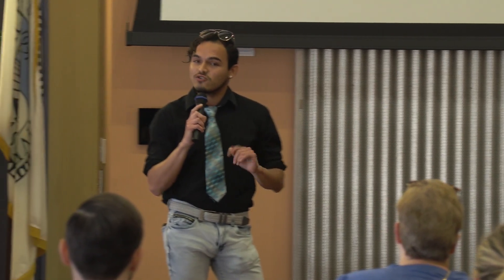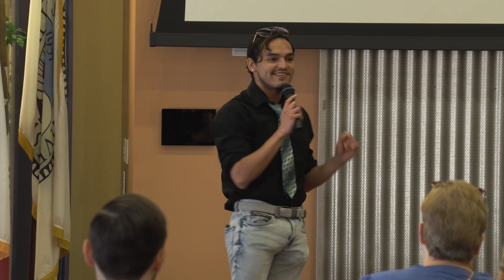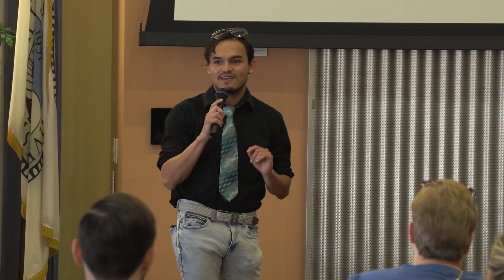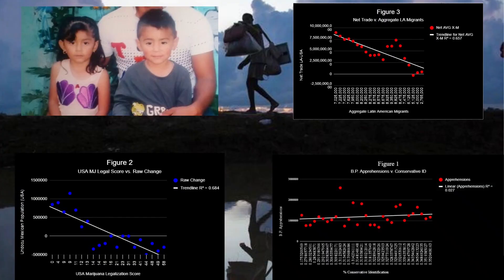Previous research also shows that border states which legalize marijuana have a significant decrease in their violent crime rates. As a result, I conducted a linear regression to compare the amount of states legalizing marijuana in the USA to the net flow of Mexican nationals migrating here. The statistically significant results show an intense correlation between the legalization of USA production of marijuana and a net decrease in Mexican nationals migrating here.